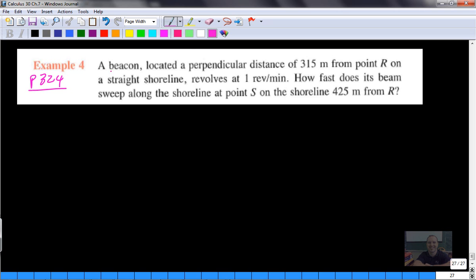The problem says a beacon, like a lighthouse or a big light that's shining, is located a perpendicular distance of 315 meters from the shore. So if we were to draw this, here is 315 meters, here's the shore, and here is the beacon as part of a lighthouse.